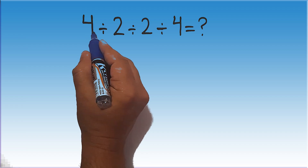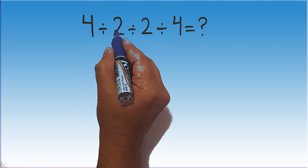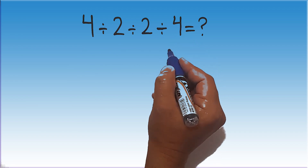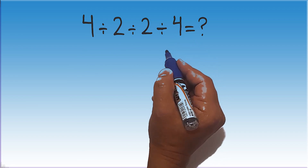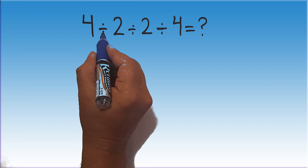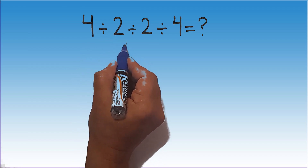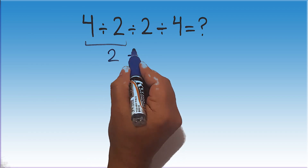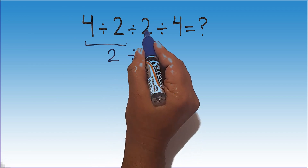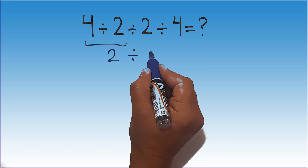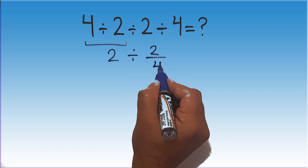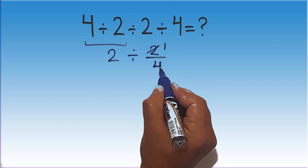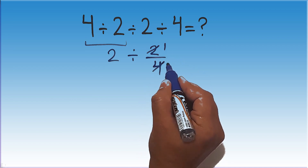4 divided by 2, again divided by 2, and divided by 4. Are you ready to solve? Let's go ahead and start it. 4 divided by 2 is just 2. And here we have division and 2 divided by 4, which is 2 over 4. 2 divided by 2 equals 1, and 4 divided by 2 equals 2.